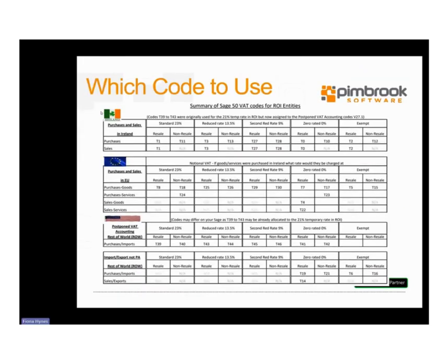To help our customers to select correctly, at Pembroke we have created a tax code summary to help users select which code to use. We have divided it into three sections represented by the Irish flag, the European flag and the USA flag representing the rest of the world. You can see the various Irish rates across the top of the page: 23%, 13.5%, the new 9%, zero rated and exempt. Below this we have divided each rate between resale and non-resale, as we need to differentiate purchases between resale and non-resale in order to generate an accurate return of trading details report from Sage at the end of the year.